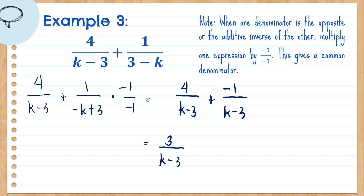This will be our final answer for example number 3. We cannot cancel the numerator term and denominator term because they are not common factors — they are terms, not factors. That's why we cannot cancel them.